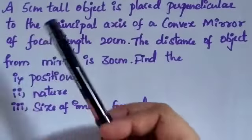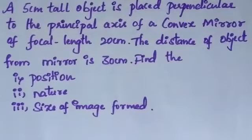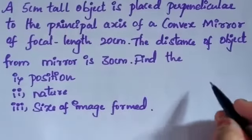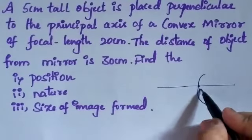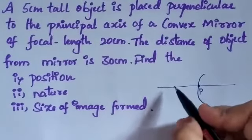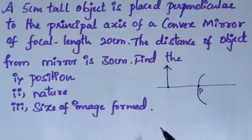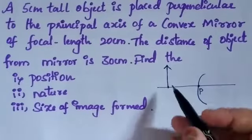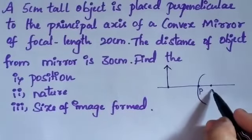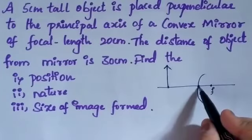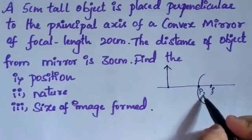The next question: a 5 cm tall object is placed perpendicular to the principal axis of a convex mirror. This is the pole, and the 5 cm tall object is perpendicular to the principal axis. The focal length is the distance between the pole and the principal focus, which is given as 20 cm.